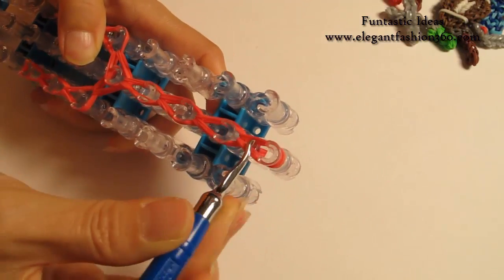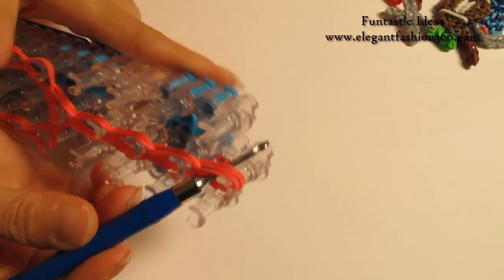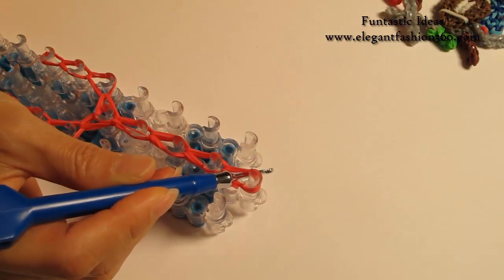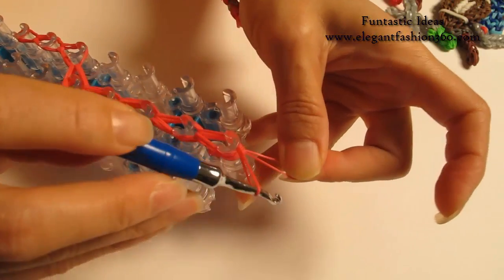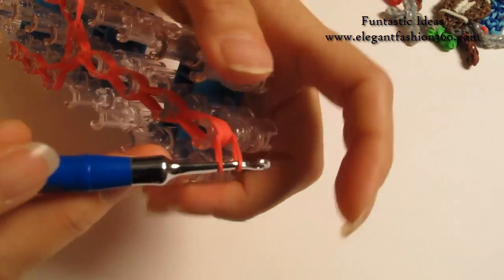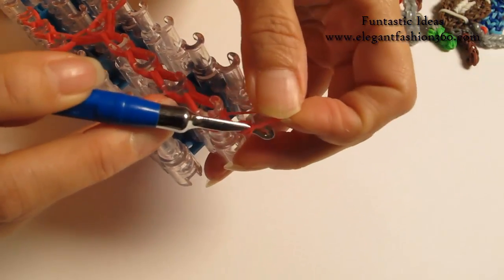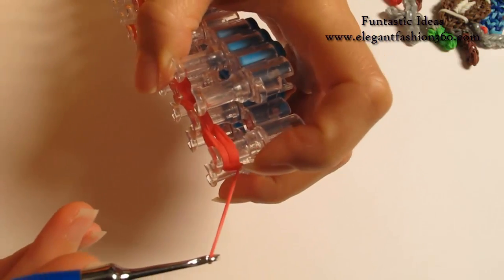And when you're done here, put your hook through the last one here. Take one single band. Grab it through. Put both ends on your hook. Take one end through the others. Pull it. So you will tie a knot here.